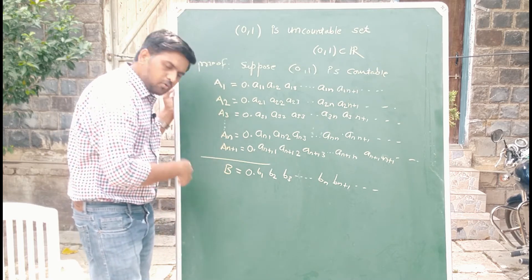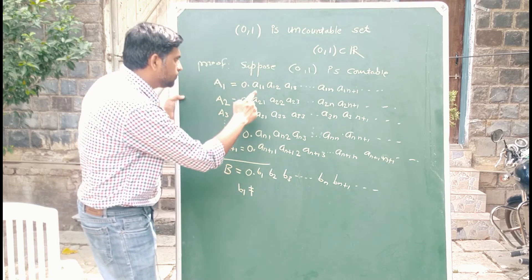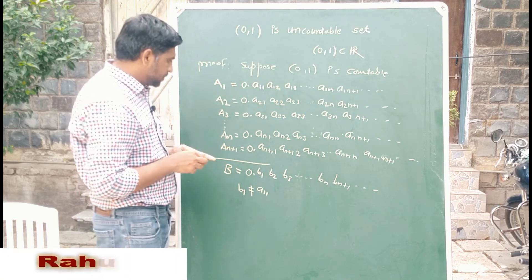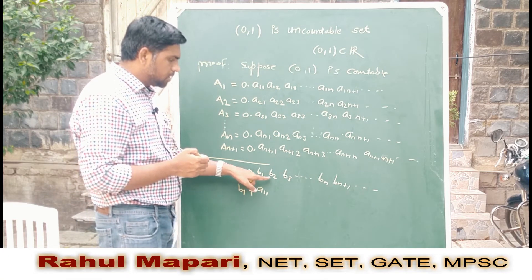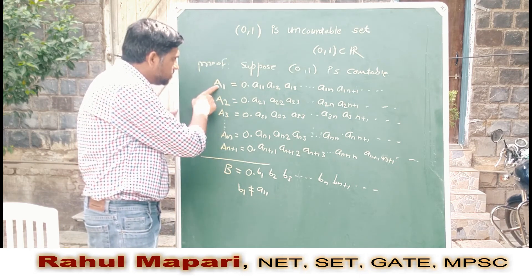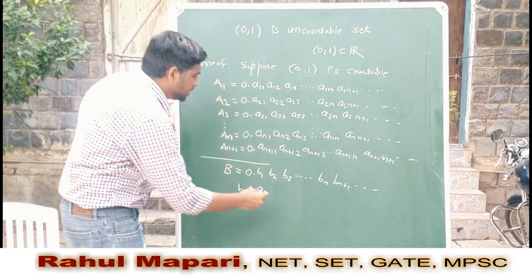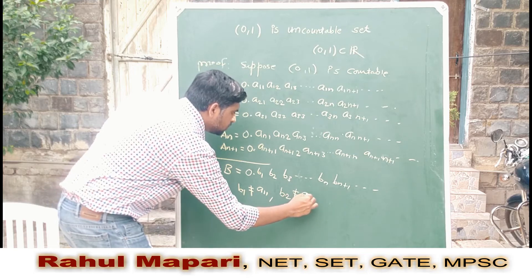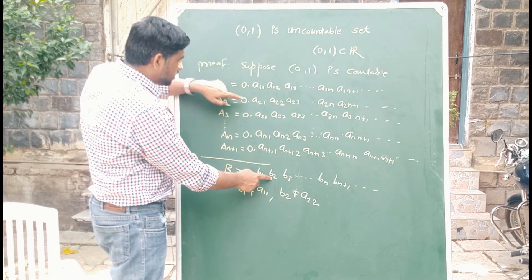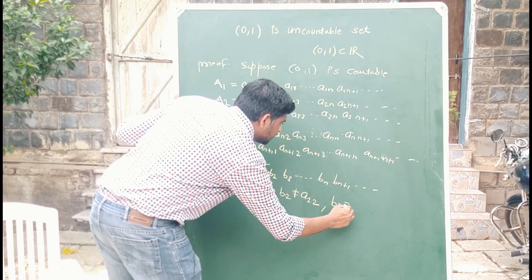We define b such that b₁ ≠ a₁₁. This confirms that b ≠ a₁, because a₁ = 0.a₁₁... and b = 0.b₁... and b₁ ≠ a₁₁, so b is different from a₁. Similarly, b₂ ≠ a₂₂, so b is not equal to a₂, because the second digit of b differs from the second digit of a₂. And b₃ ≠ a₃₃, so b ≠ a₃, and so on.